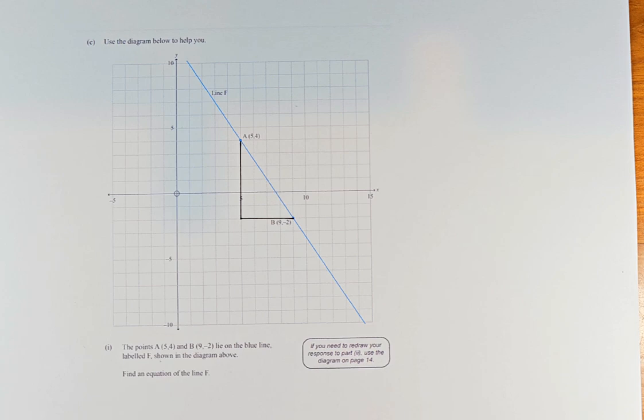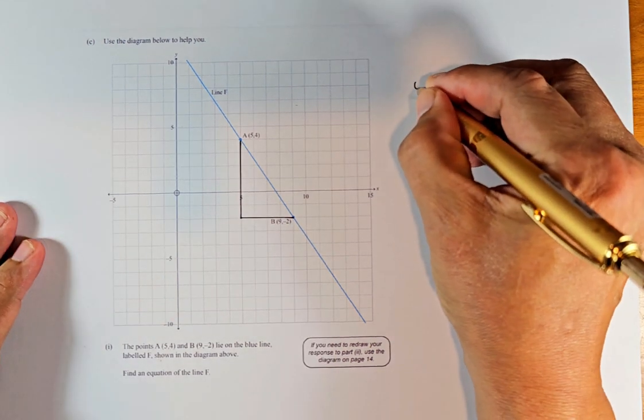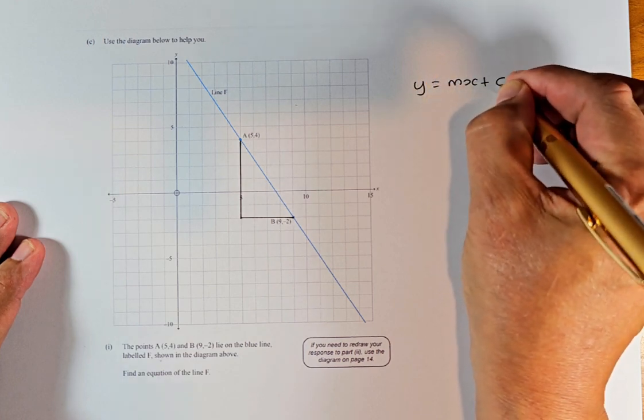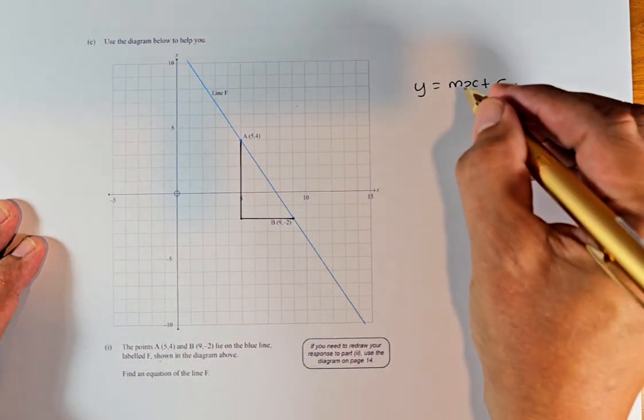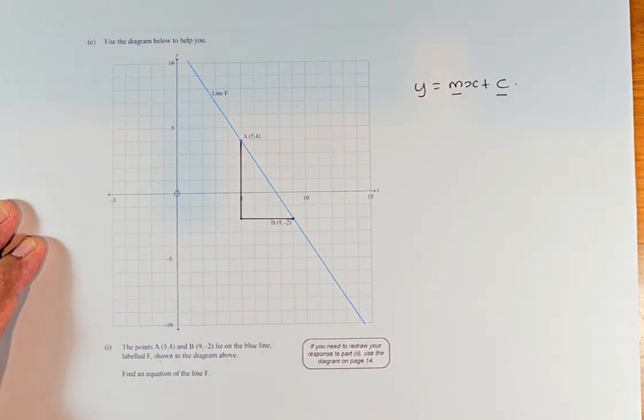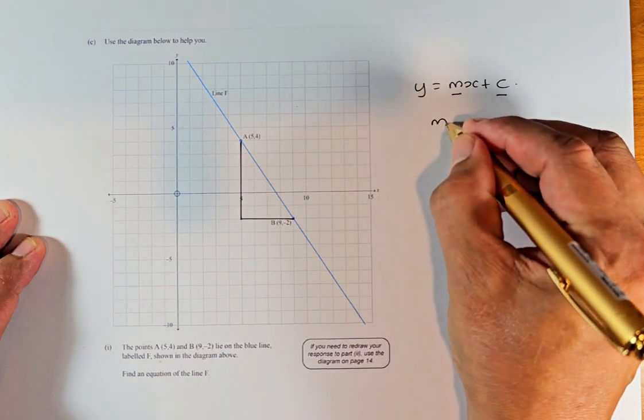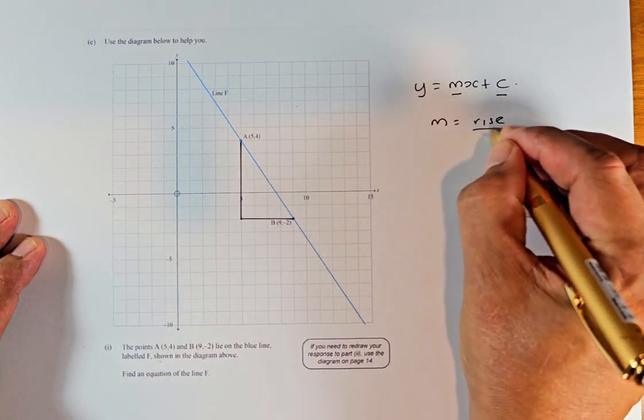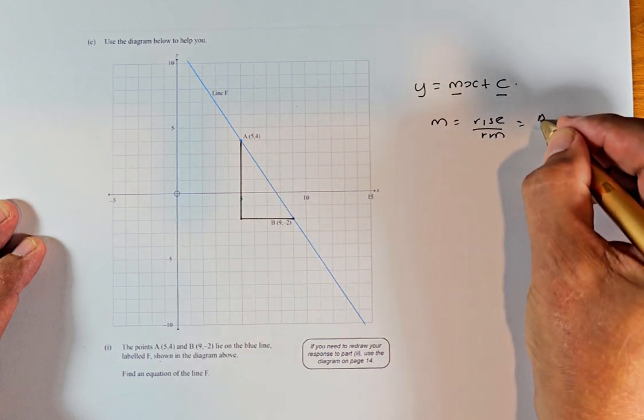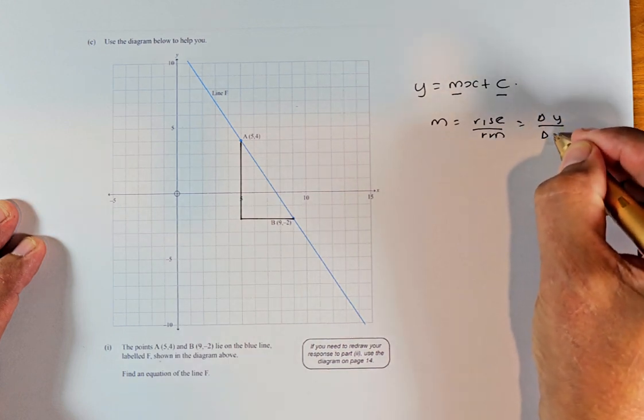So to find the equation, it always will be Y equals MX plus C because this is a linear equation. M is the gradient and C is the intercept. To find the gradient, we need to find the rise divided by the run, or if you prefer, change in Y over change in X.